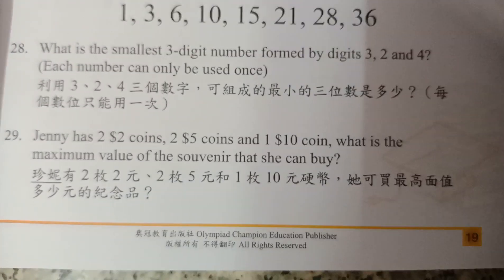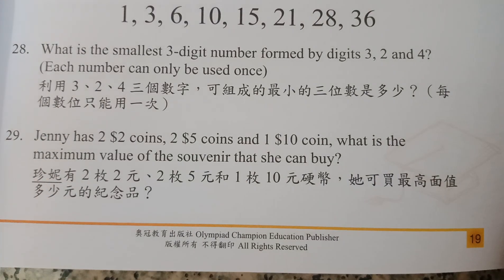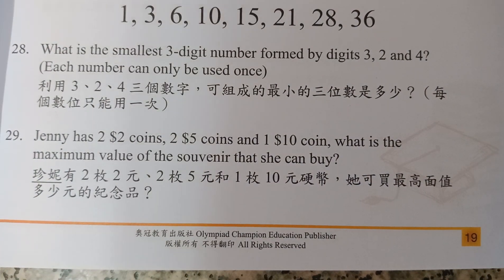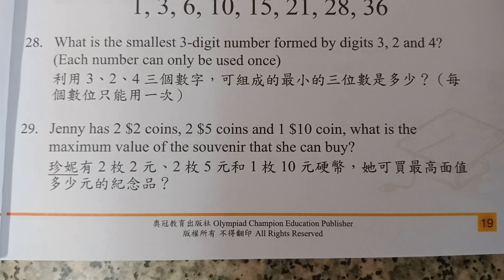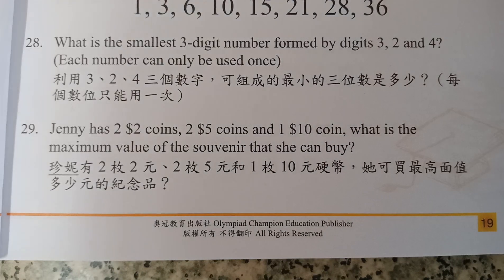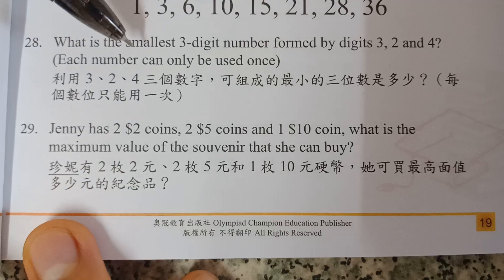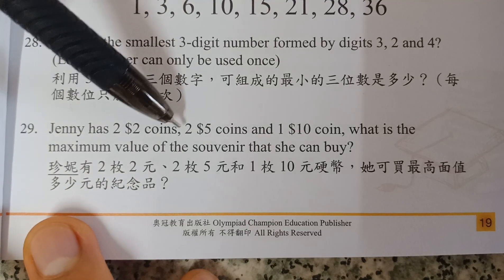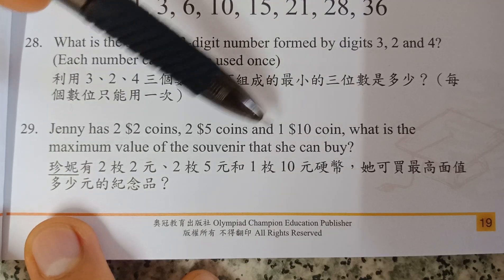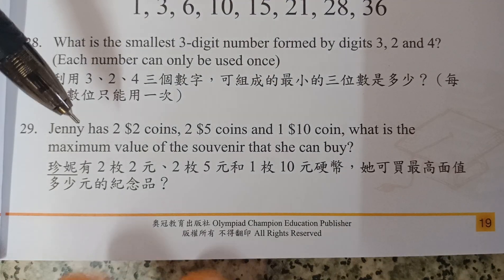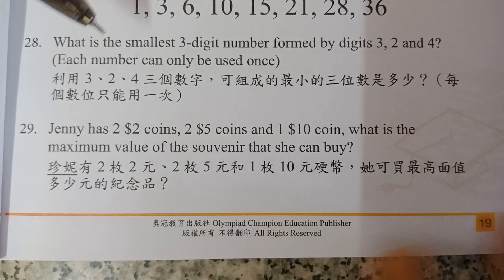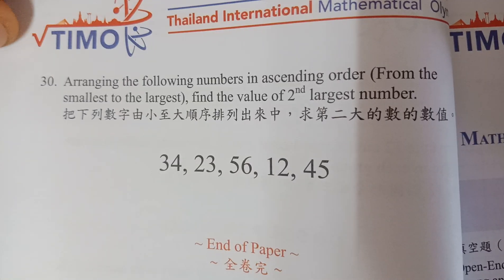Number twenty-nine: Jenny has two $2 coins, two $5 coins, and one $10 coin. What is the maximum value of the souvenir she can buy? The maximum value is the total: 2×$2 = $4, plus 2×$5 = $10, giving $14, plus 1×$10 = $10. Total: $24. The maximum amount Jenny can spend is $24.